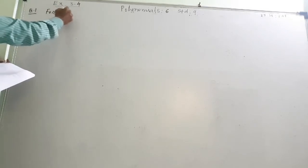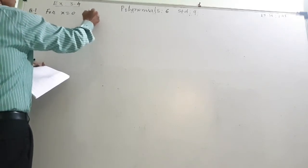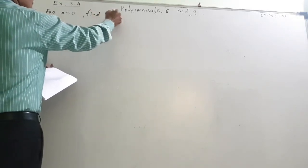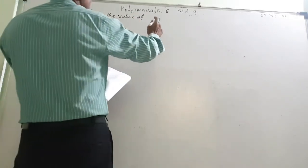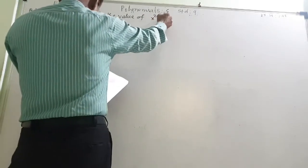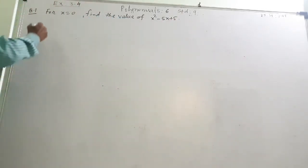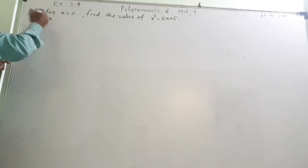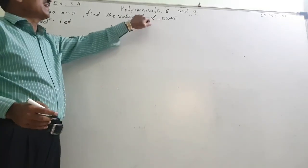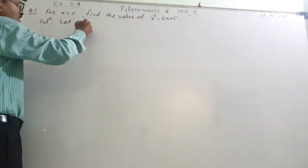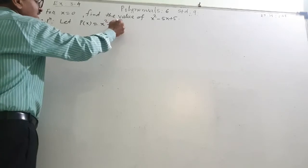For x equal to 0, find the value of x square minus 5x plus 5. So how to do this solution? This will be for two marks. Let this be the polynomial in x. So I will write p of x, means polynomial of x, equal to x square minus 5x plus 5.